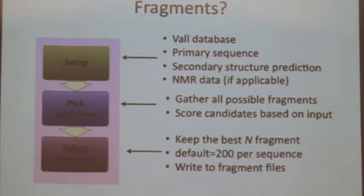You can use whatever you want as long as what secondary structure you put in is in the correct format, PSIPRED, SAM, or Jufo. And then NMR data if applicable. And then what the make fragments script basically does is take all this input information and gathers up all the possible fragments from the database that fit to your sequence. And scores them according to the input information and then takes the top 200 according to the score that it has. And you keep the best fragments, usually the best 200, and you write these out to these fragment files.